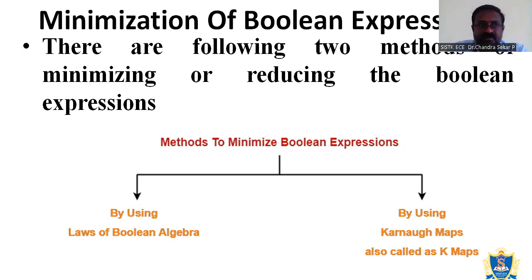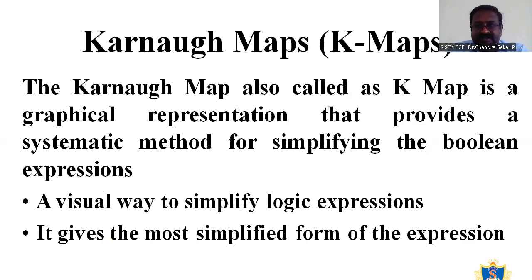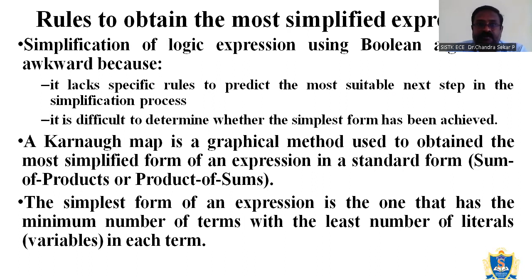The third method for simplifying the Boolean expression is by using the tabulation method. First, we will discuss about the K-Map. The K-Map, or Karnaugh Map, is a graphical representation that provides a systematic method for simplifying the Boolean expression. The K-Map is a visual way to simplify the logical expression and it gives the most simplified form of expression.